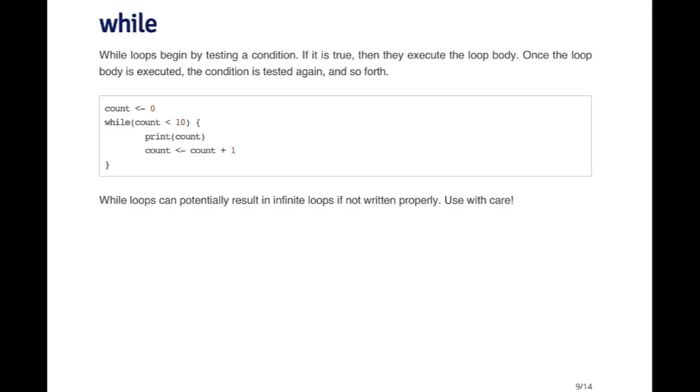The while loop is useful because it makes things easy to read sometimes. It's very obvious here that this loop is supposed to stop working or stop executing when the value of the count variable is 10 or more. So it makes it a little bit more readable.